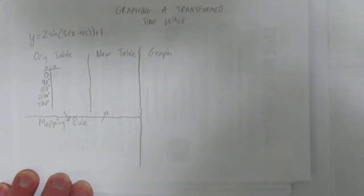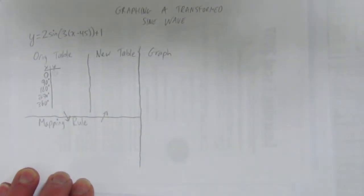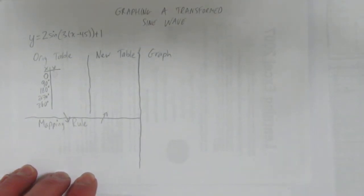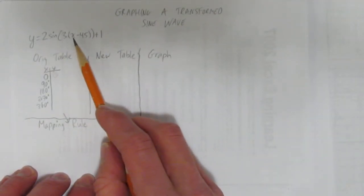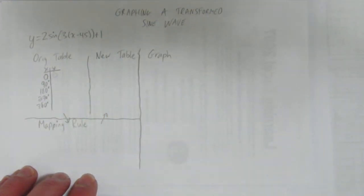In this video, we'll look at graphing a transformed sine wave. The equation we have is y equals 2 sine of 3(x minus 45) plus 1. Notice that this 3 is factored out here. That's good. You want to make sure that you've factored out the k value from both of the terms in the brackets here. It's been done.